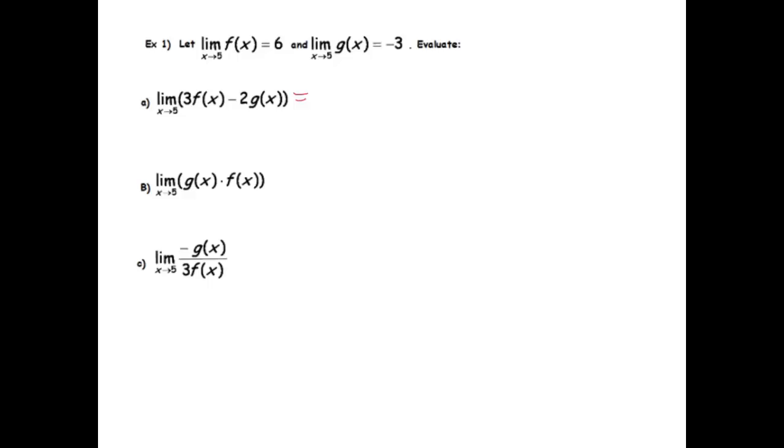So the first thing we can notice is we can use the sum and difference rule by breaking this up into two limits. And you can almost view it as distributing the limit sign. So that's the limit of 3f(x) minus the limit of x goes to 5 of 2g(x). And again, if you look at the properties I just listed, that's just the sum and difference property.